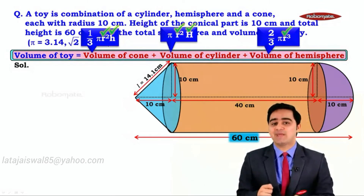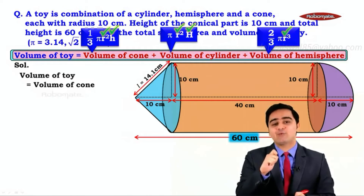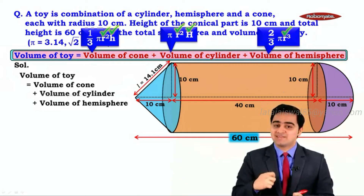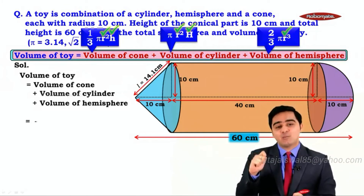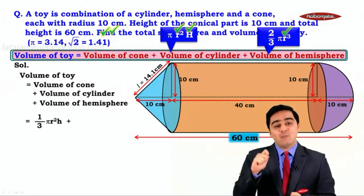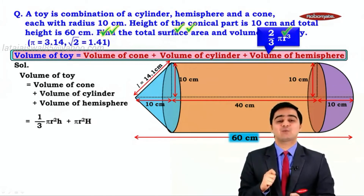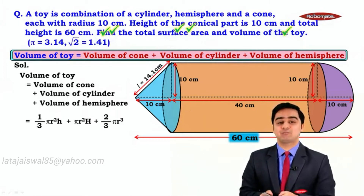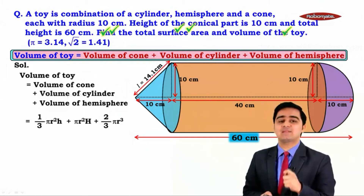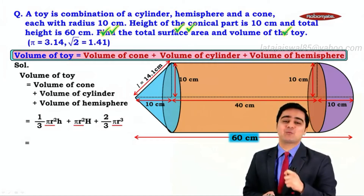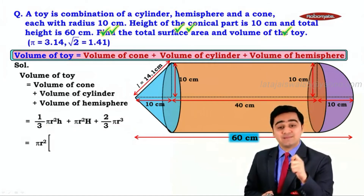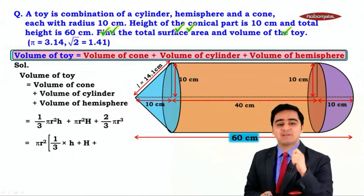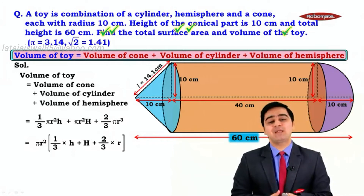Now let us find the volume of the toy. Volume of the toy equals volume of cone plus volume of cylinder plus volume of hemisphere. Writing their formulae: volume of cone is 1/3 π r² h, volume of cylinder is π r² H, and volume of hemisphere is 2/3 π r³. We can take π r² as common, leaving inside the brackets: 1/3 × h + H + 2/3 × r.